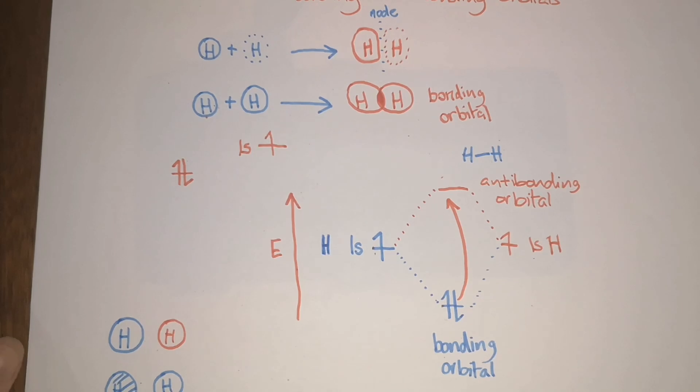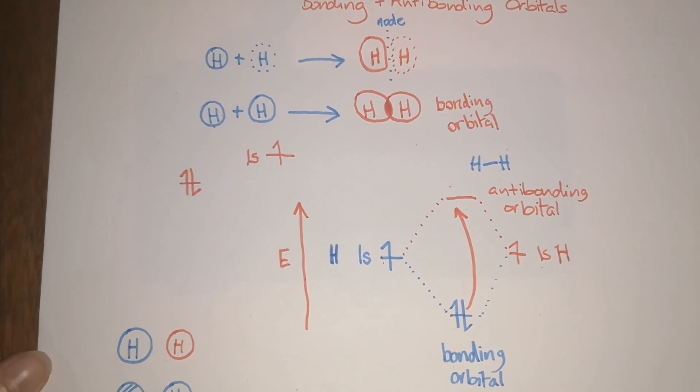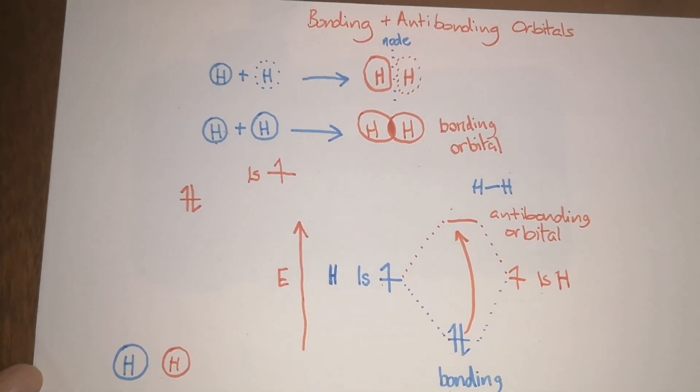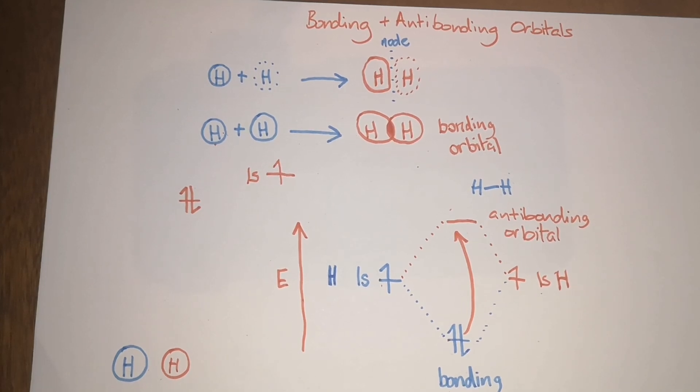That's a bit of an introduction to bonding and antibonding orbitals. I'm going to have another video on a more complicated example of methane.